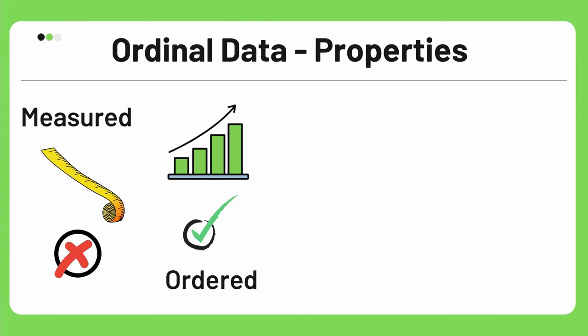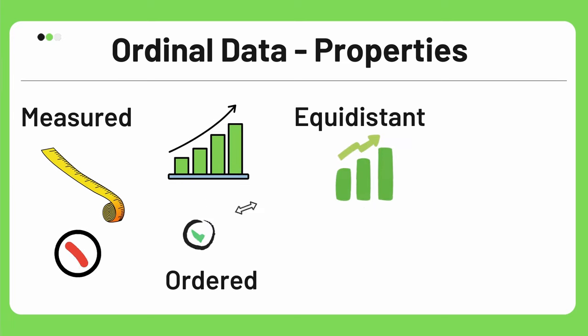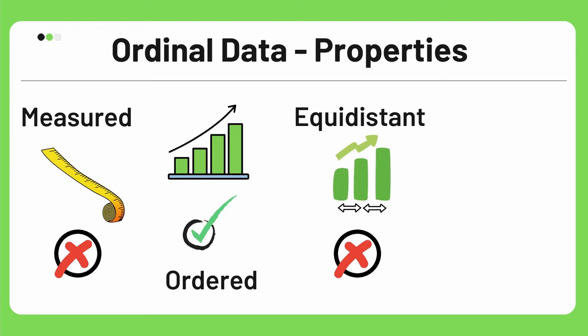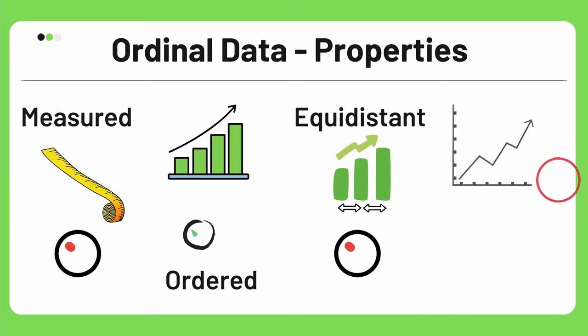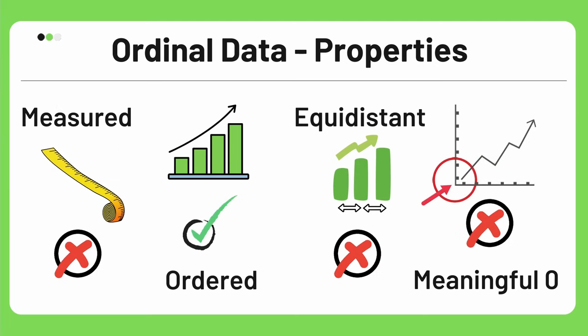Third, ordinal data is not equidistant — for example, you cannot say that large minus medium equals extra-large minus large; that type of mathematical operation is not possible. Fourth, it doesn't have a meaningful zero — for example, there is nothing like size zero.